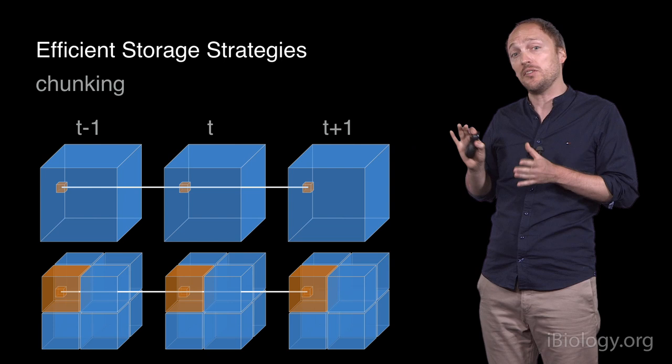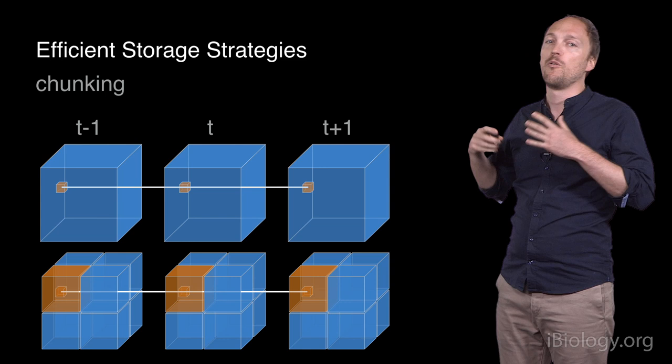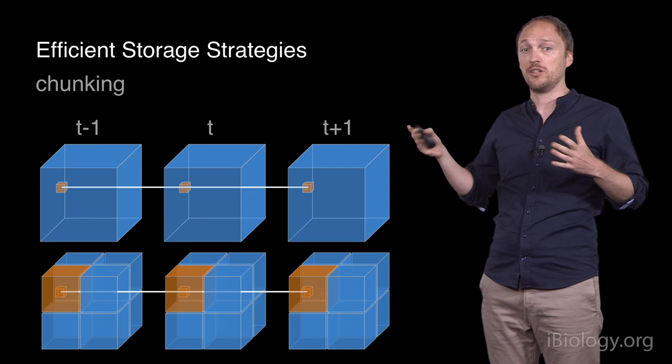To address this, a common strategy consists in partitioning the dataset into smaller storage units, called chunks. Ideally, the partitioning happens along all dimensions, thus facilitating localized access. Now, you can access the individual voxels by loading the relevant chunks without having to load the entire stack.